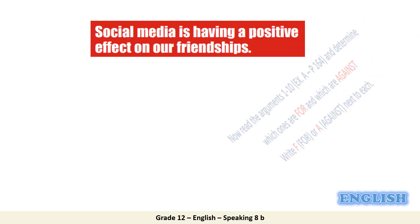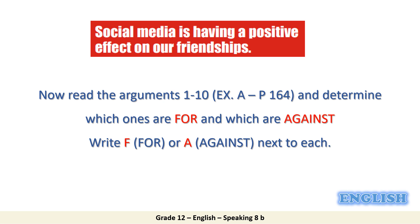Now please go to page 164. Read the arguments from 1 to 10 and determine which ones are 'for' and which are 'against.' Write F for 'for' and A for 'against' next to each one.